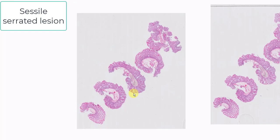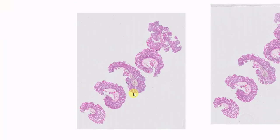They are typically on the right side and they tend to be larger than one centimeter, but you can see them on the left side and they can be smaller. If you were to make a diagnosis of a sessile serrated lesion based solely on size and location, you might as well drop pathology and become a gastroenterologist.